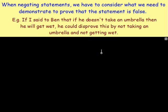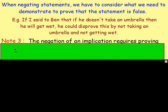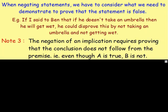And finally, if I said to Ben that if he doesn't take an umbrella, then he will get wet — how could he disprove that? Well, the first part could remain true: Ben could not take an umbrella, but he can disprove it by then not getting wet. So Note 3: the negation of an implication requires proving that the conclusion does not follow from the premise. You keep the first part the same but the conclusion becomes 'not B'.